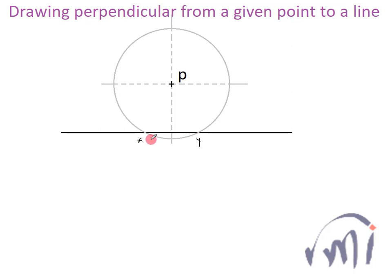And now I will draw two congruent circles with point X and point Y as their centers and the radius slightly more than the half of the length of the line segment XY.